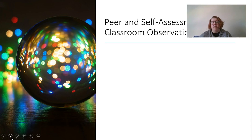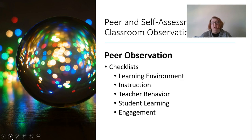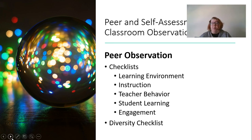Student feedback is important for all of our reflective practice. We can also have peer assessments and self-assessments. One approach is a classroom observation schedule where a peer comes in and observes your classroom using a checklist that looks at things like your learning environment, your instruction, what the teacher was doing, what the students were doing, what they were learning, and what their engagement was like. There are published protocols as well as ones you could develop on your own, including questions dealing with diversity or classroom management.